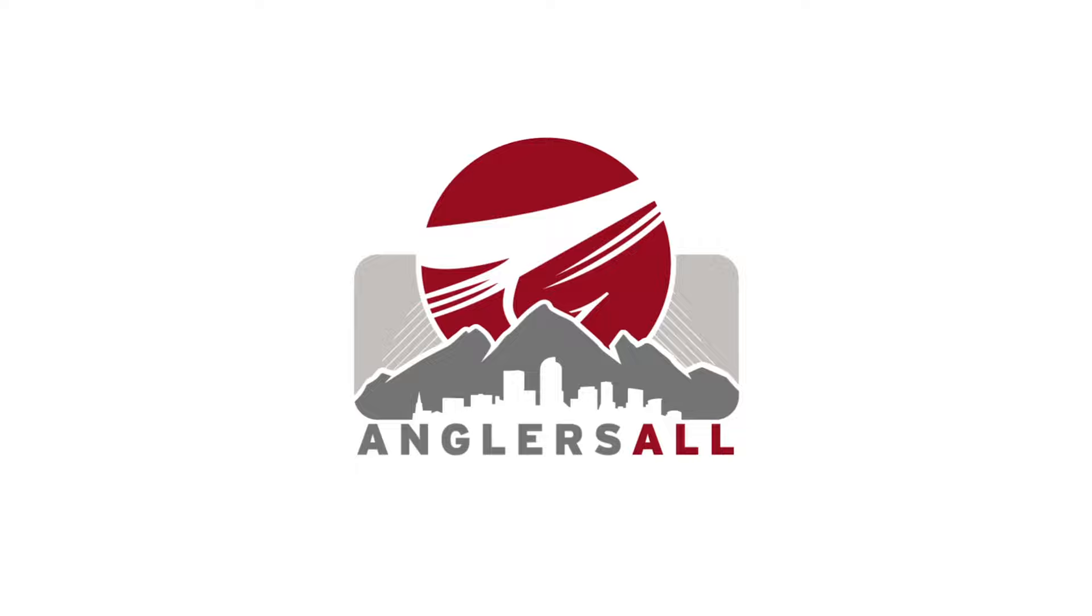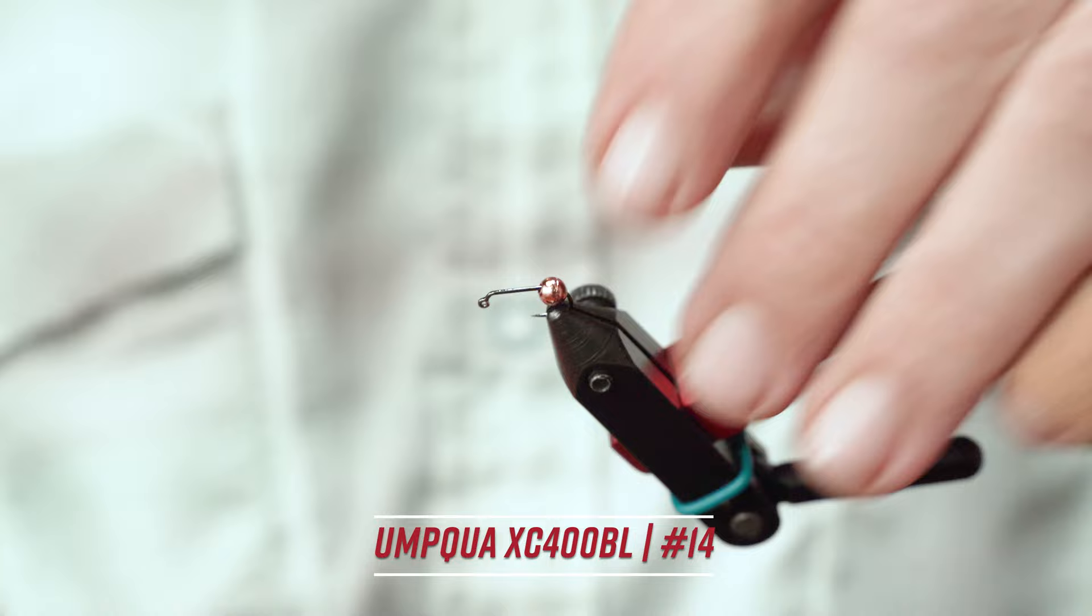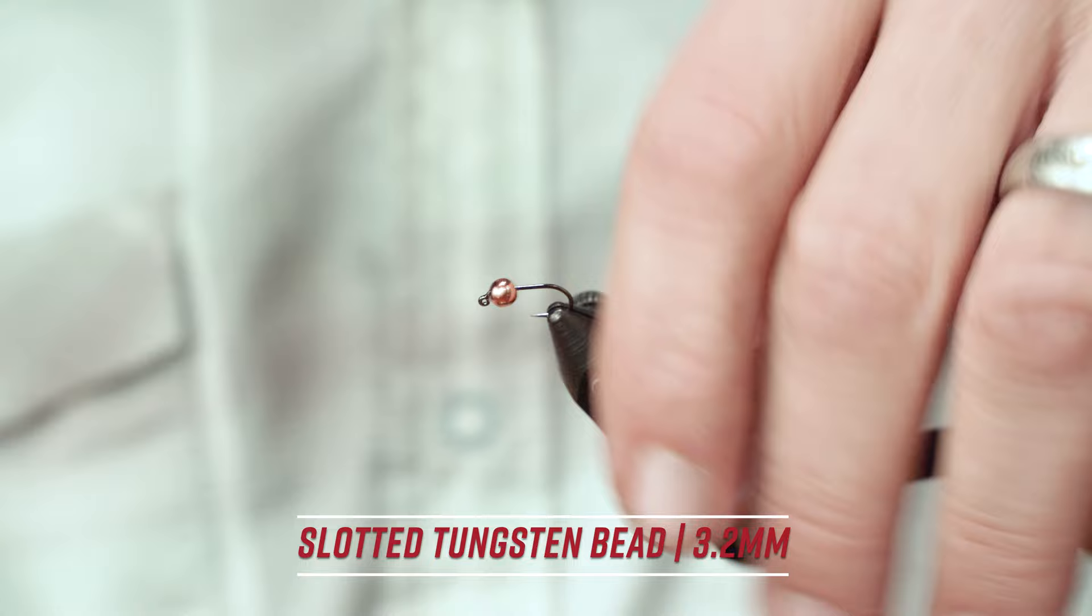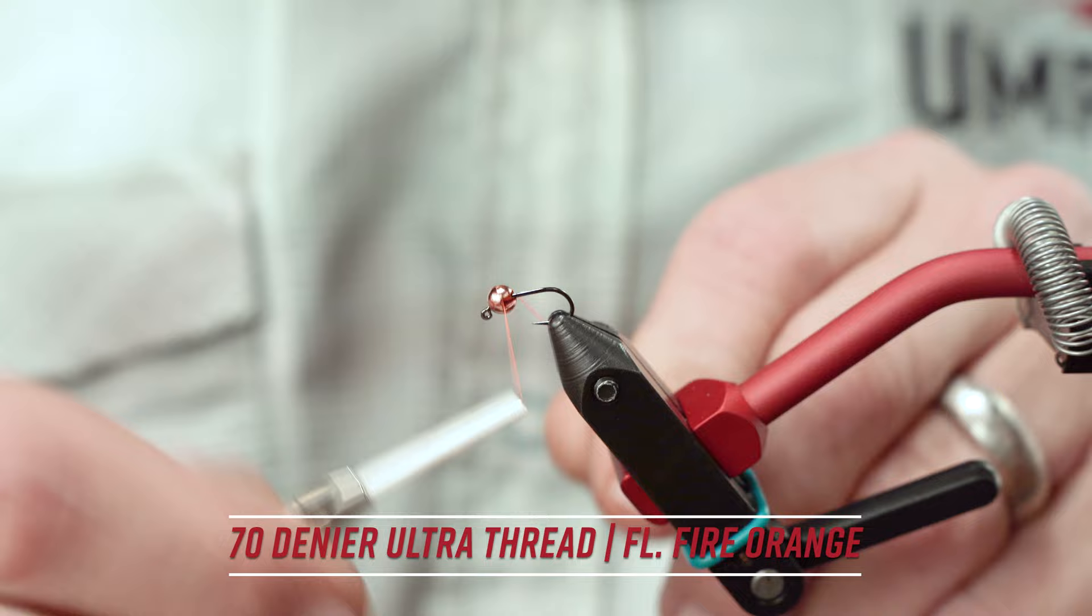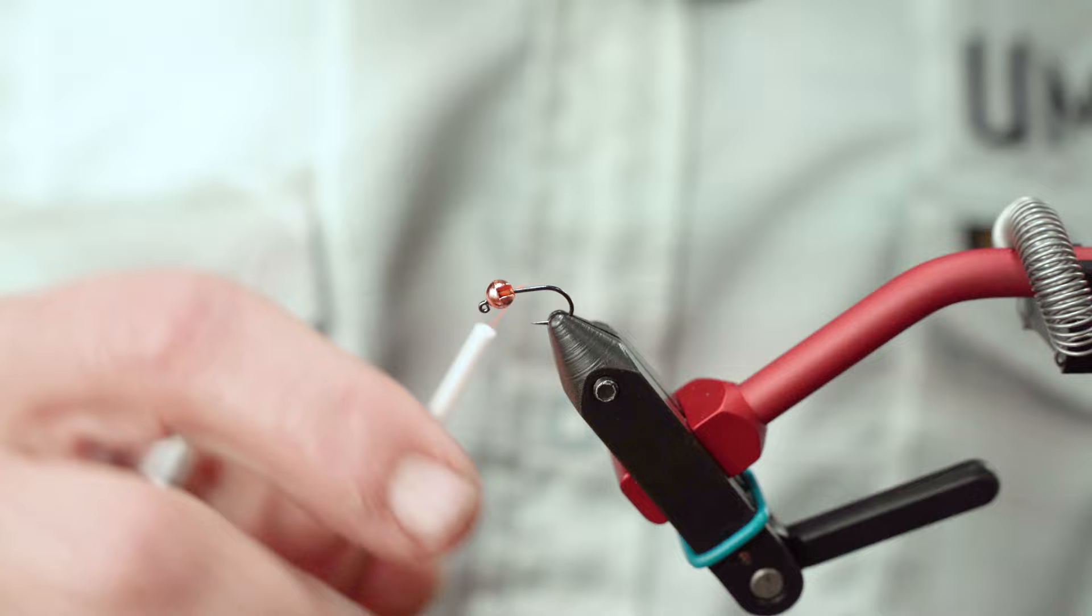In the vise, I've got an Umpqua X-Series 400 barbless size 14 with a 3.5 mil copper bead. UTC 70 in Fire Flow Orange, and one of the new TAMCO bobbins. Because it's that comfy and nice to spin.